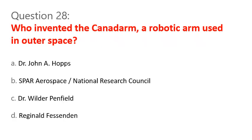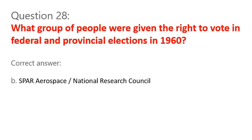Question 28. Who invented the Canadarm, a robotic arm used in outer space? A. Dr. John A. Hopps. B. Spar Aerospace / National Research Council. C. Dr. Wilder Penfield. D. Reginald Fessenden. Correct answer: B. Spar Aerospace / National Research Council.